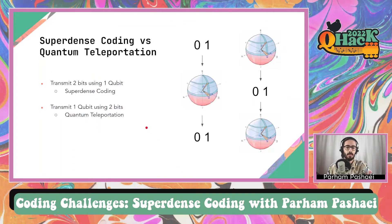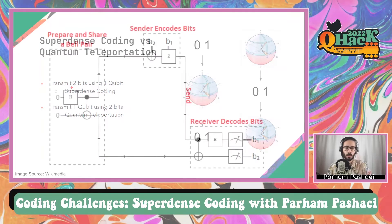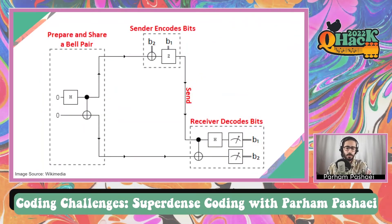To clarify the difference: in teleportation we transmit one qubit using two classical bits, but in super dense coding we transmit two classical bits using one qubit. Now before we write the code, it's a good idea to check the circuit of the super dense coding. As you can see, the whole problem uses two wires, so in the code we will also use two wires.